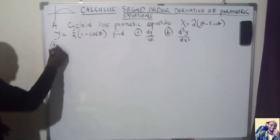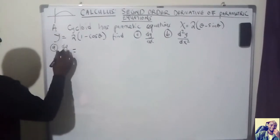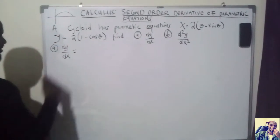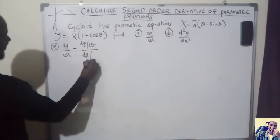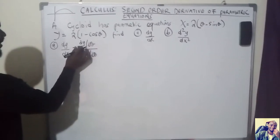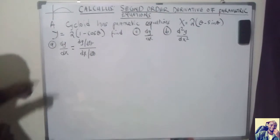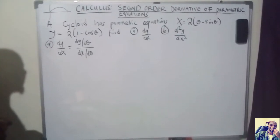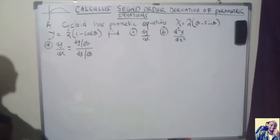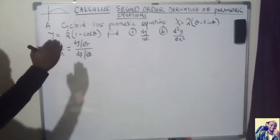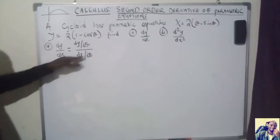In part A, we want to find dy over dx. From the previous videos, we discussed that dy over dx of parametric equations is equal to dy with respect to theta divided by dx with respect to theta. Because y is expressed as a function of theta and x is expressed as a function of theta, every time theta changes there will be a change in x and a change in y, so we can find the change in y over change in x.